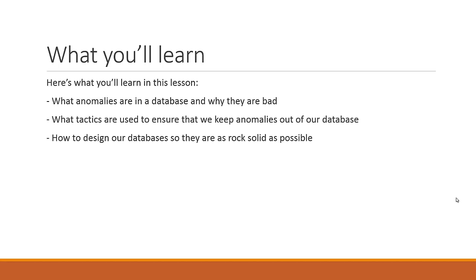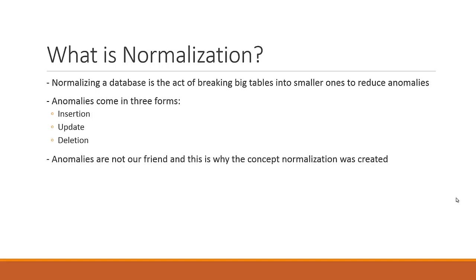So today, what you're going to learn — it looks like it's a measly little bit of stuff, it's only three points, but like I said, it's going to be a long lesson. You're going to learn about what anomalies are in a database and why they are bad things. We're going to learn about some tactics used to ensure that we keep anomalies out of our database. And we're also going to learn a little bit about how to design our databases so they are as rock solid as possible. You're probably going to want to come back to this video to refresh your knowledge on all of these topics.